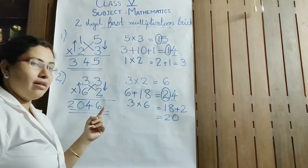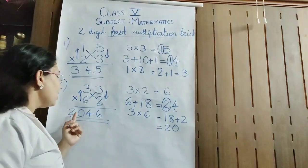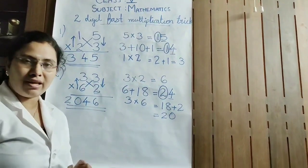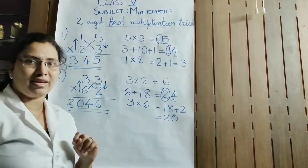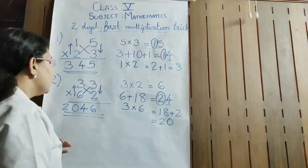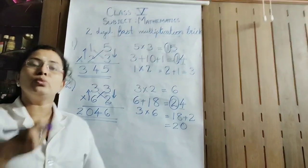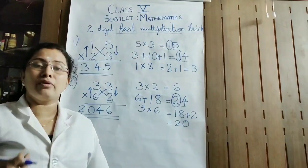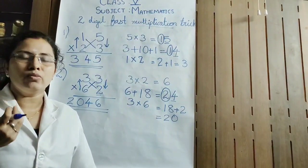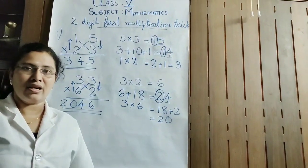So when you multiply 33 with 62, you will be getting 2046. You have got it in one step. Just practice it and you can do these types of questions in a minute — or you need only seconds to answer.